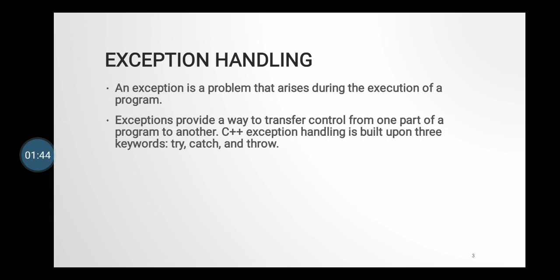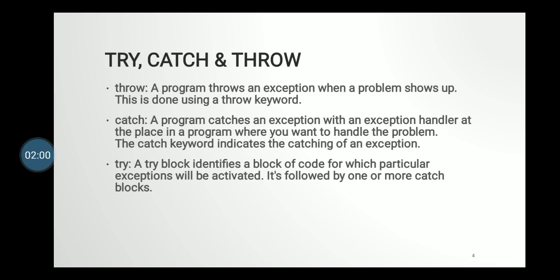In C++, exception handling is built upon three keywords: try, catch, and throw. The try block identifies a block of code for which a particular exception may occur — it includes the code where an exception might arise. Whenever any exception occurs, the try block throws that exception to the catch block. Inside the catch block, we write the code which is executed after the exception occurs.